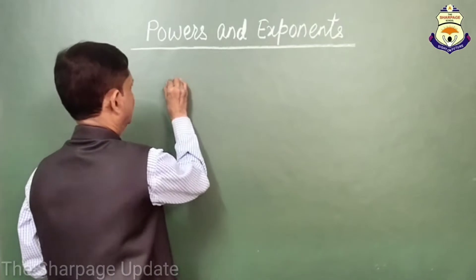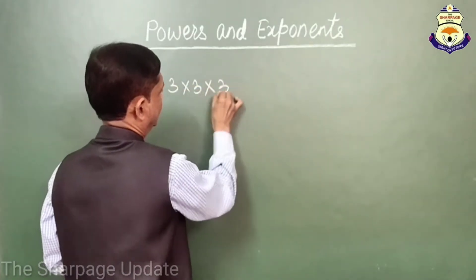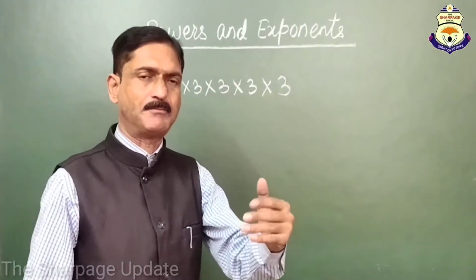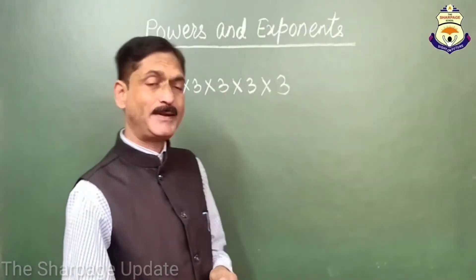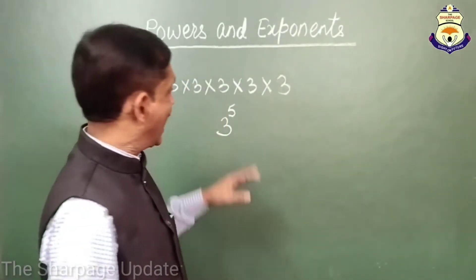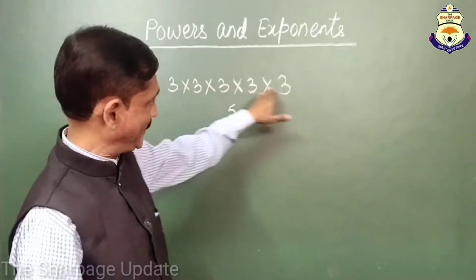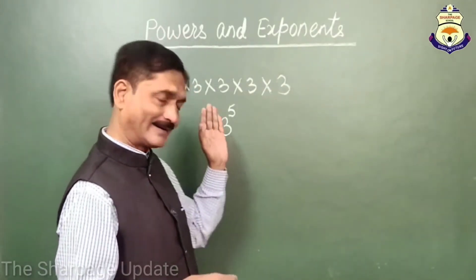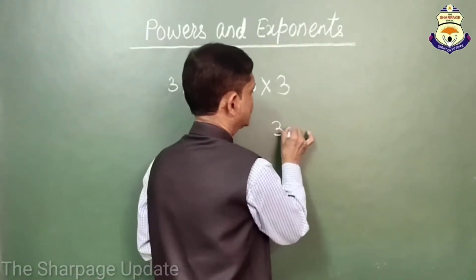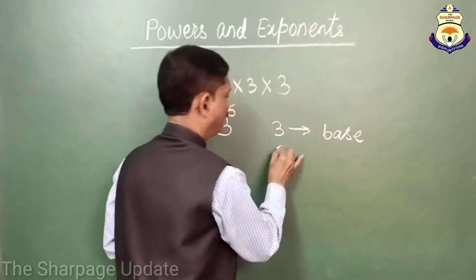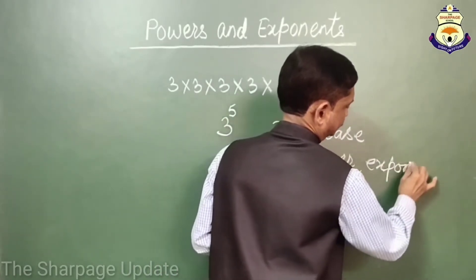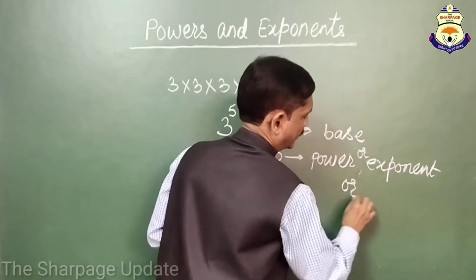For example, if 3 × 3 × 3 × 3 × 3, here we can see that 3 is multiplied by itself 5 times. So this repeated multiplication can be written in a concise way and is read as 3 raised to the power 5. Here 3 is the base and 5 is known as the power, exponent, or index.